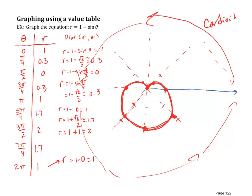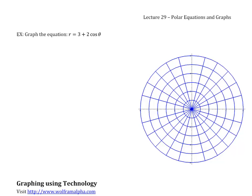You can graph polar equations by points, but you can see how tedious that gets — all you're really doing is plotting the value of r at each theta. Polar grid paper is a helpful resource for drawing these by hand. You can find polar grid paper for free by doing a Google or Bing search, print it off, and use it as you graph these equations.